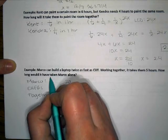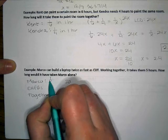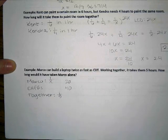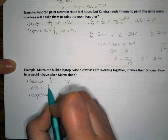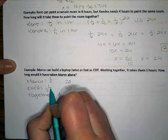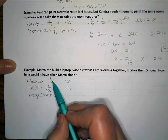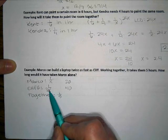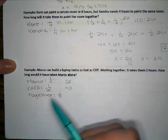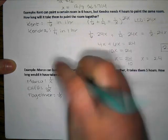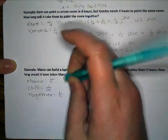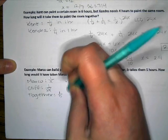So Marco is the one who has the unknown time, but he is twice as fast as Cliff. So if Marco's time is X, then Cliff's time is going to be double that because Marco is twice as fast. So I'm hoping that that reasoning kind of made sense to you guys.